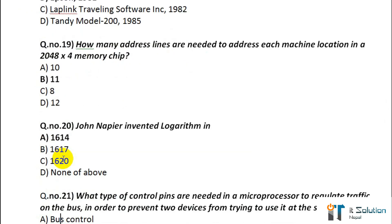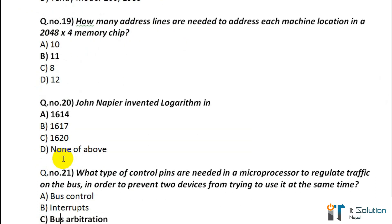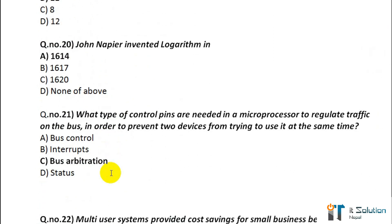Question number 20: Who invented logarithms? The correct answer is option A — 1614. Question number 21: What type of control signals are needed in a microprocessor to regulate traffic on the bus, in order to prevent two devices from trying to use it at the same time? Its correct answer is option C — bus arbitration.